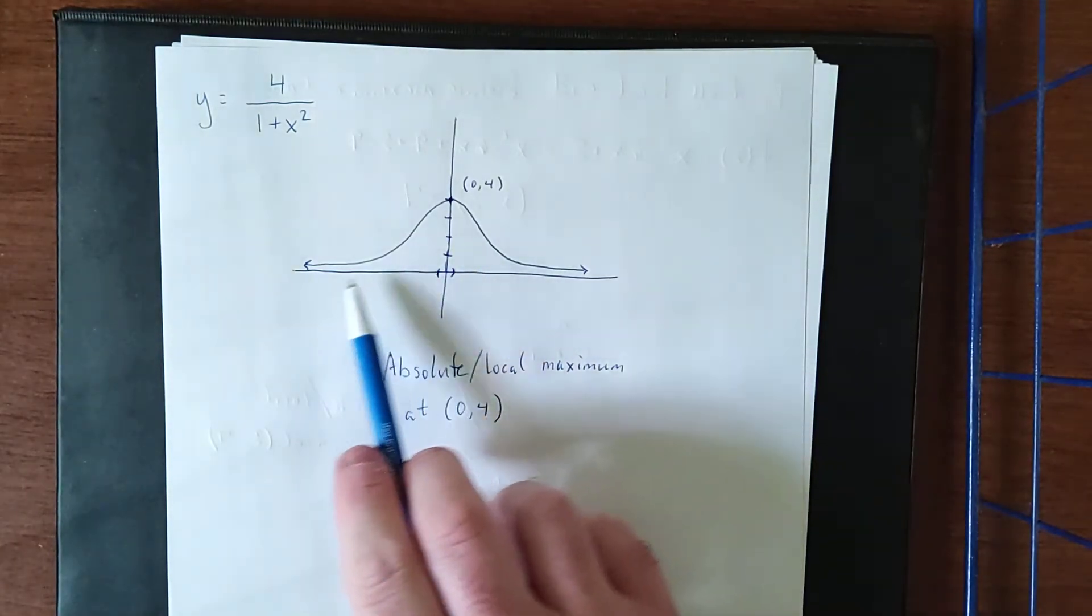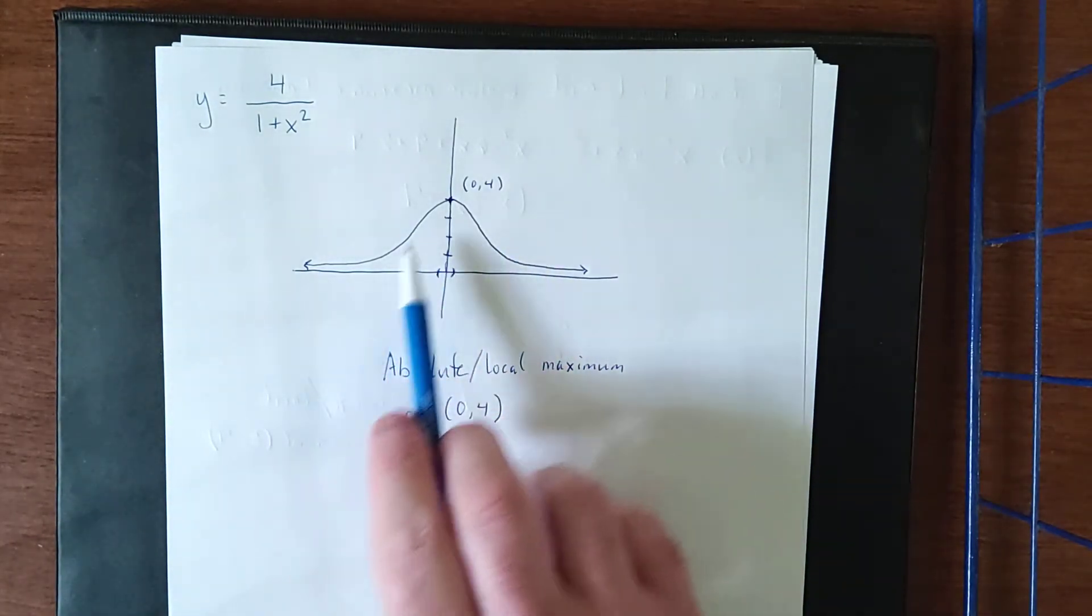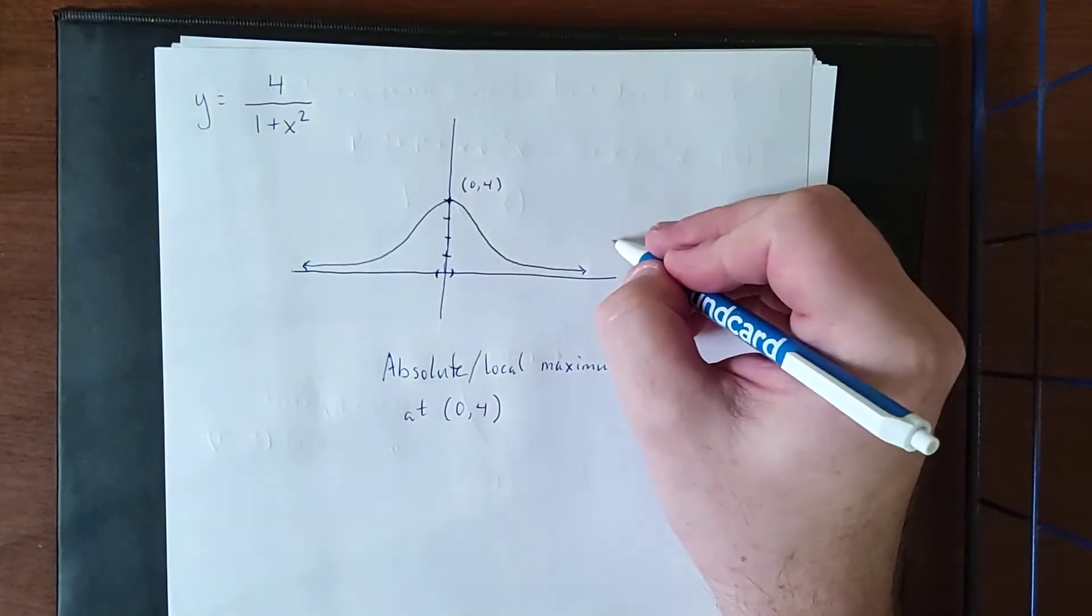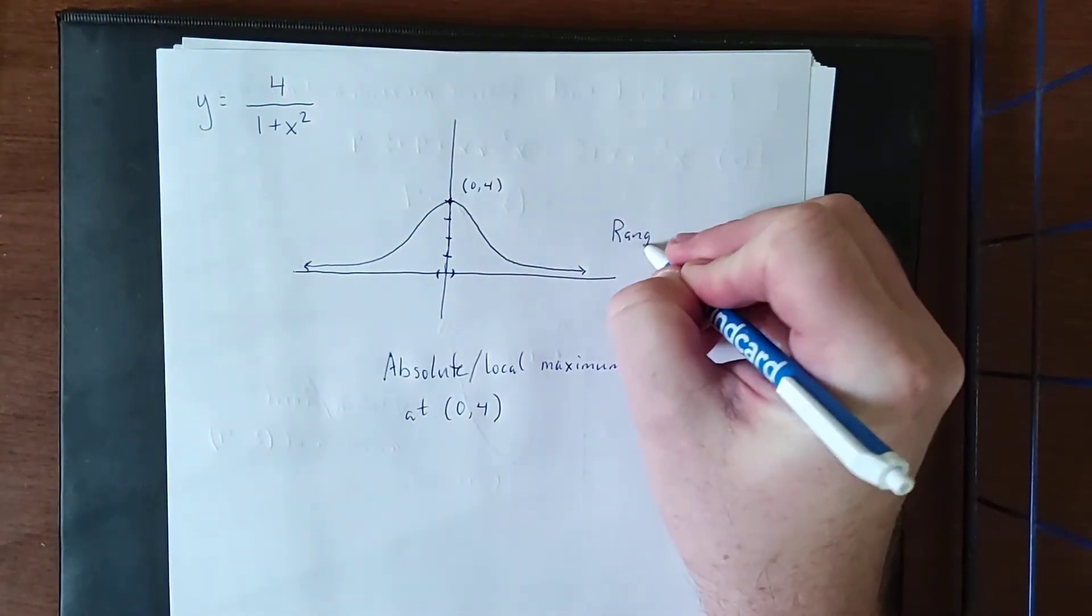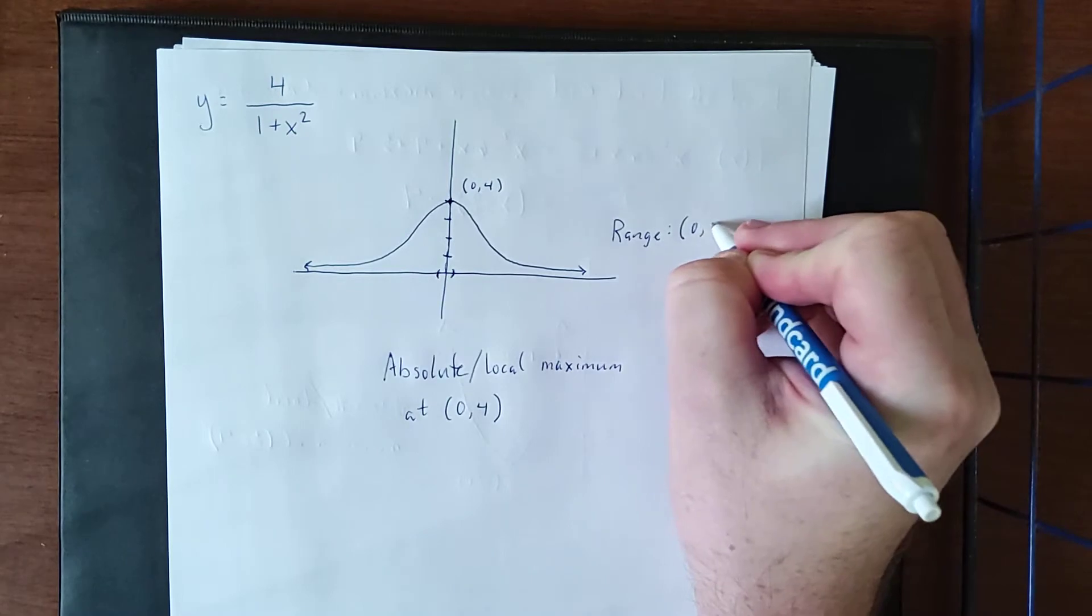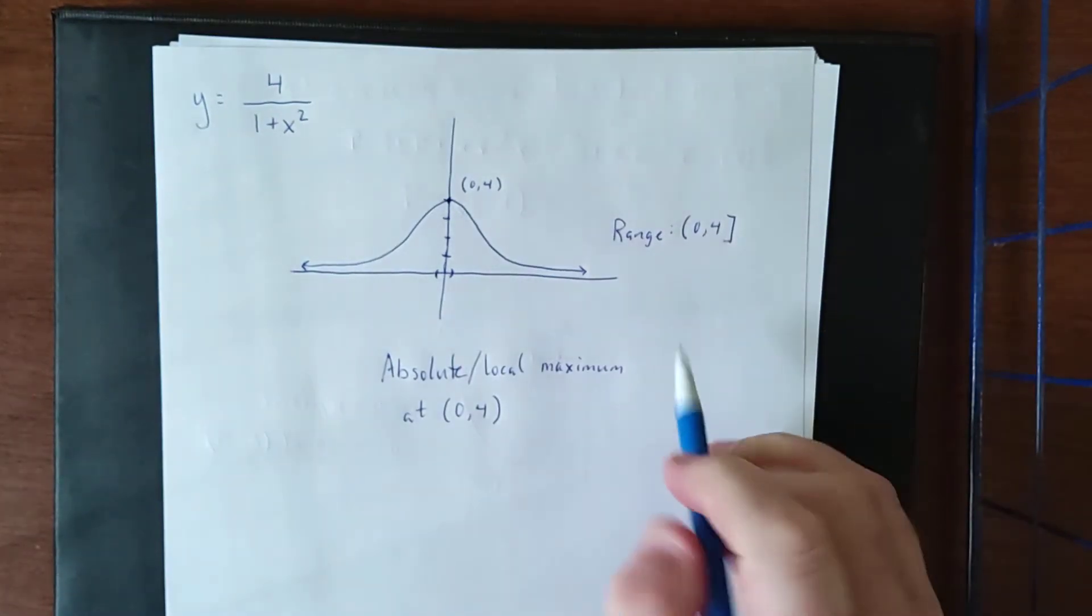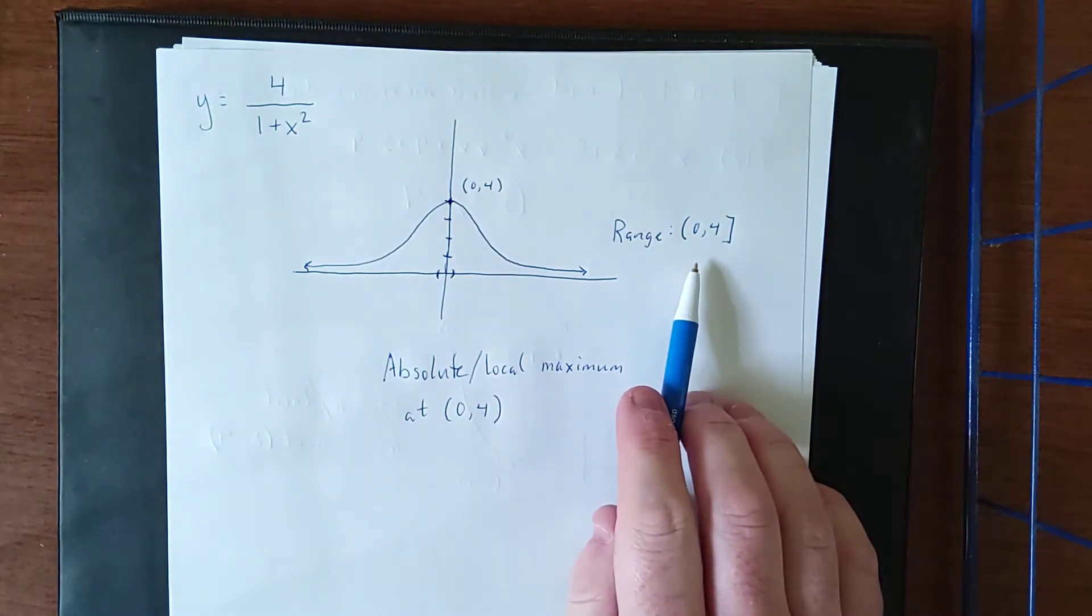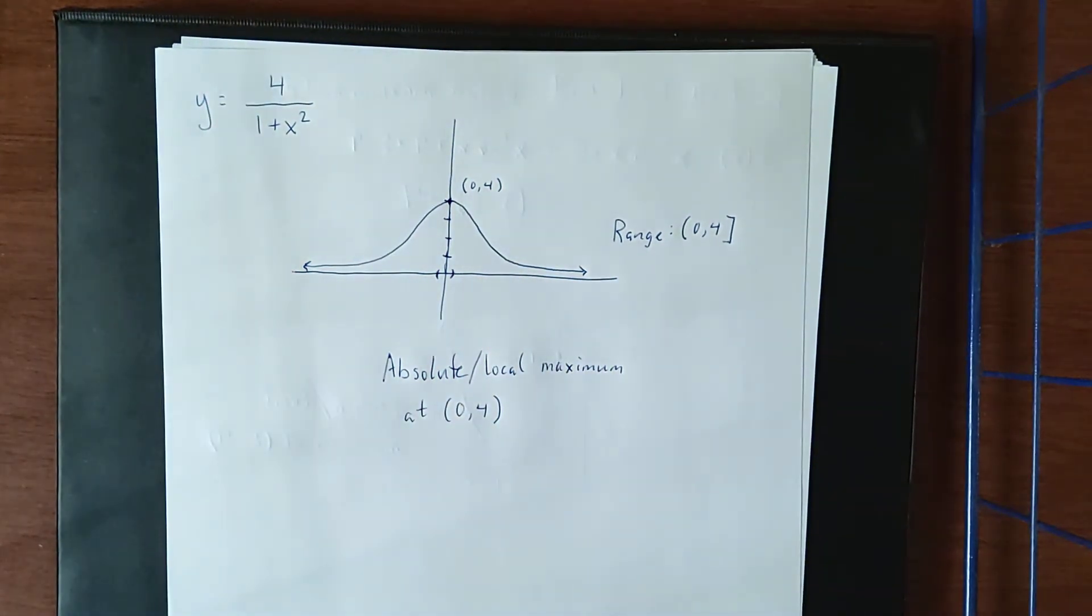Now because of the asymptotic behavior that we see here, we are going to see neither a local minimum nor an absolute minimum. Rather, we can identify that the range of this function is going to be the half-open, half-closed interval from 0 to 4. Again, we never actually attain a y value of 0, we just approach it in an asymptotic fashion.